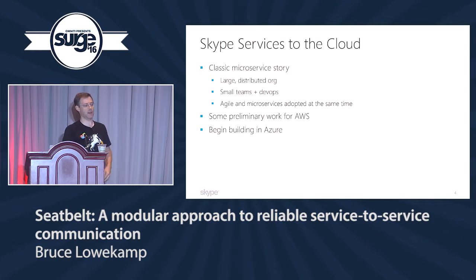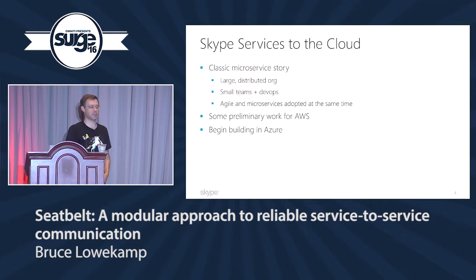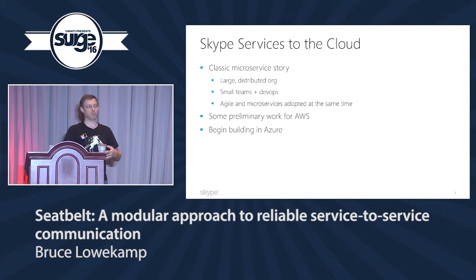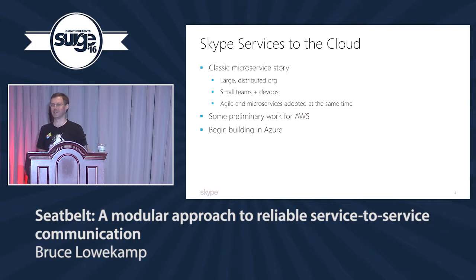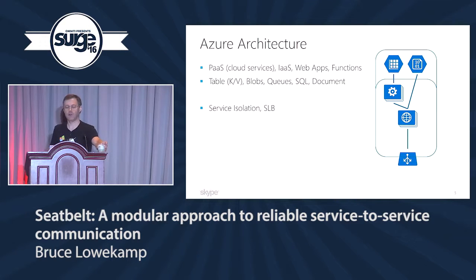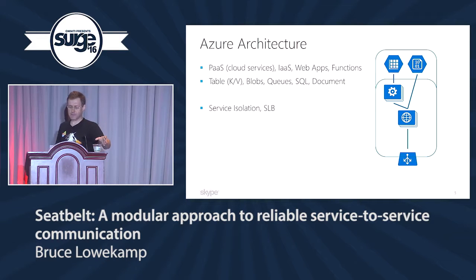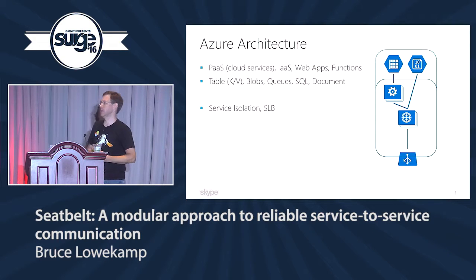This structure naturally leads to co-located small teams that build microservices. We adopted Agile and microservices at roughly the same time. We started before the Microsoft acquisition with some preliminary work in AWS, but just as we were getting started on that, Microsoft bought Skype. We said: now we're part of a company that owns its own cloud. So, what is Azure?